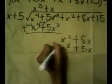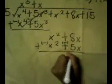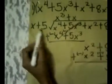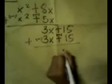Again, change this to negative sign. x squared plus 8x, plus negative x squared minus 5x, is equal to 3x. Then bring down 15. 3x plus 15 divided by x plus 5. 3x divided by x is equal to 3. 3 times x is equal to 3x. 3 times 5 is equal to 15.